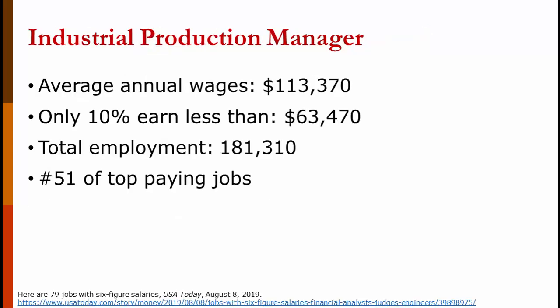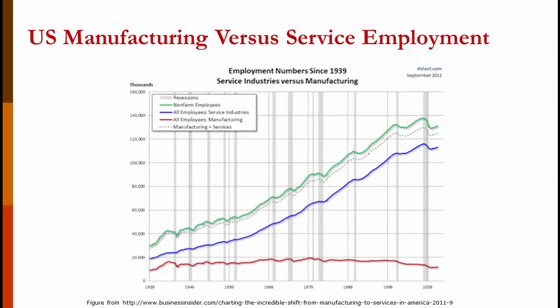Let's look at one operations job: the industrial production manager, which could be a plant manager or one level below. The average annual wage is $113,000, and only 10% of people in this role earn less than $63,000. We employ about 181,000 of these in this country even though much production has been offshored, and it ranked number 51 on a list of the top 100 paying jobs. A graph on the screen shows the growth in service jobs — where most graduates will likely work — alongside the steady state or slight decline in manufacturing jobs.